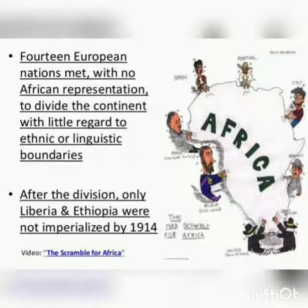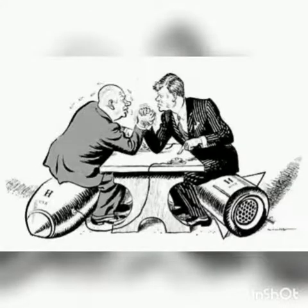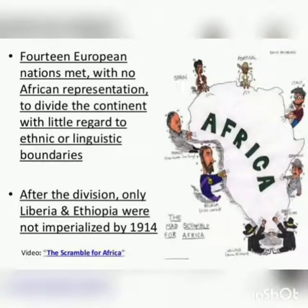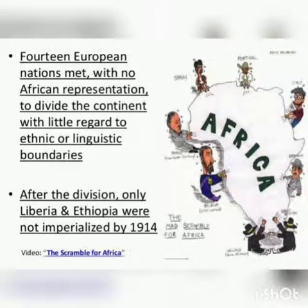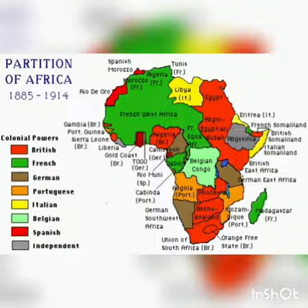The Berlin Conference was attended by the European nations that were interested in acquiring colonies in Africa. The Portuguese were there, the British were there, and the French were there — all interested in acquiring colonies in Africa. The aim of the conference was to lay down rules on how to acquire colonies and avoid going to war.